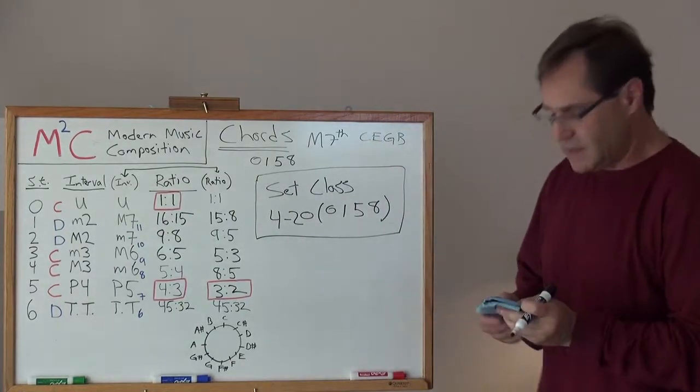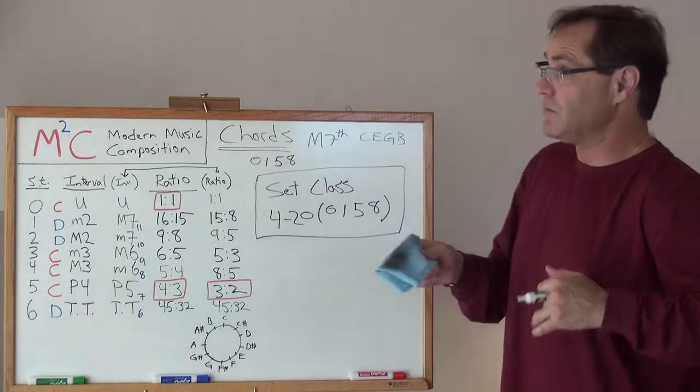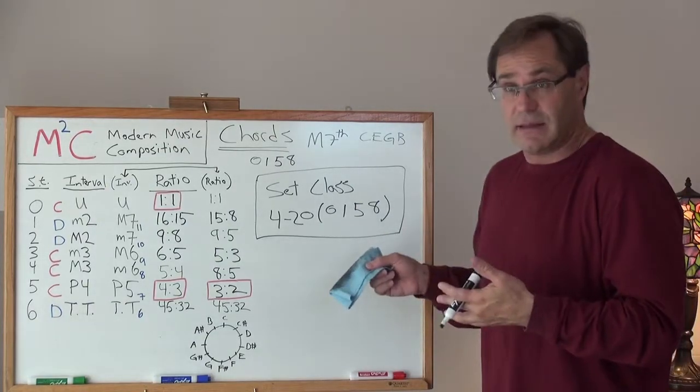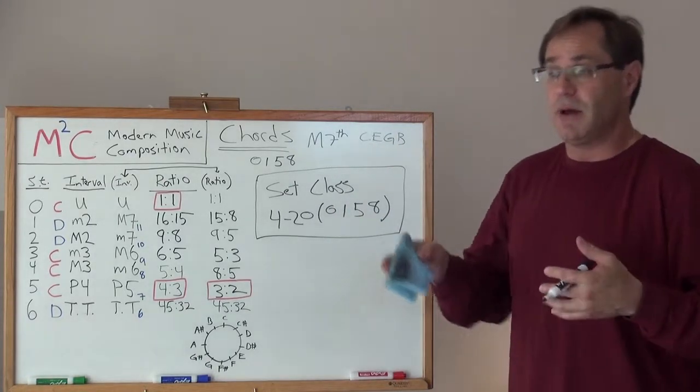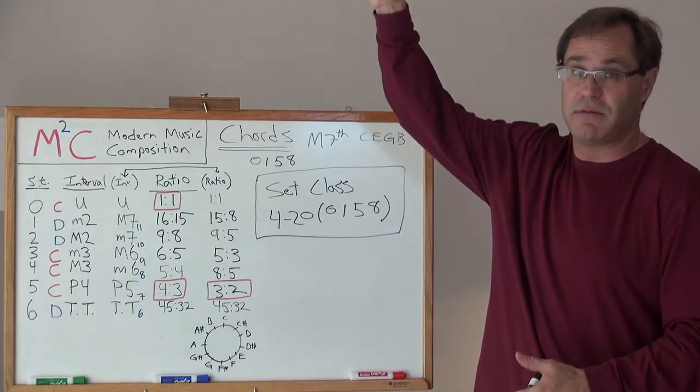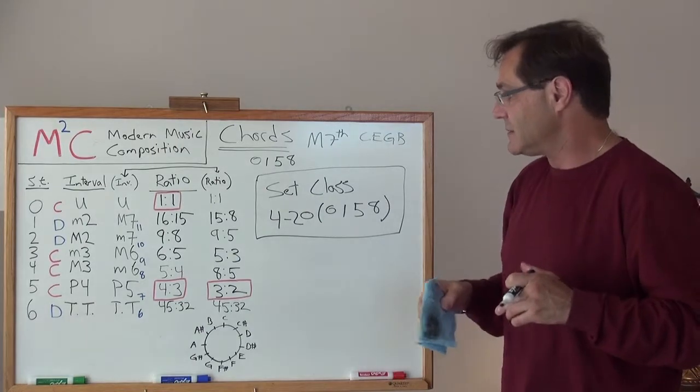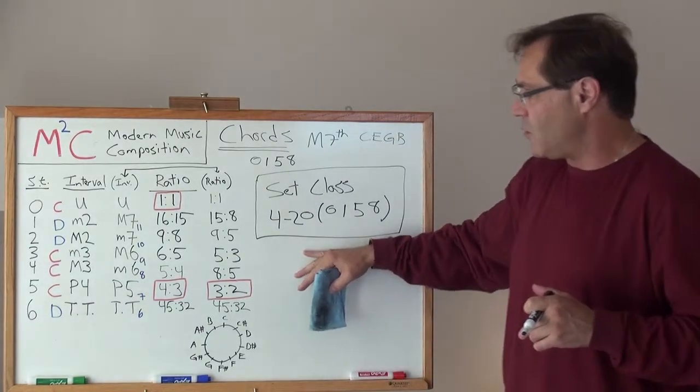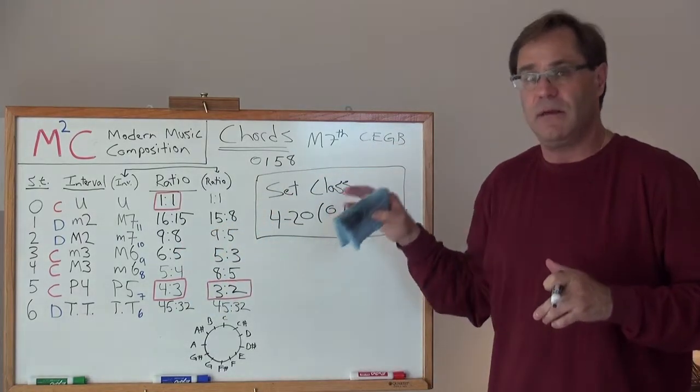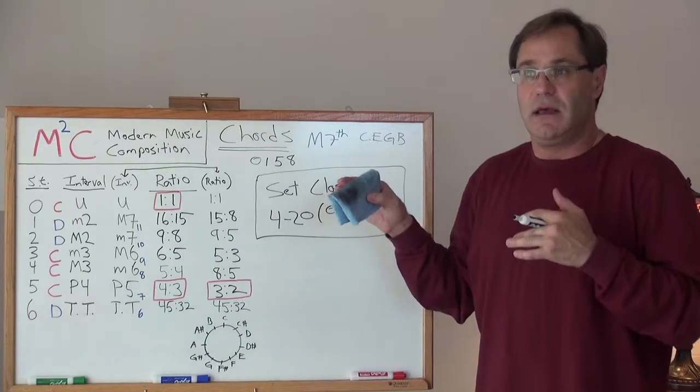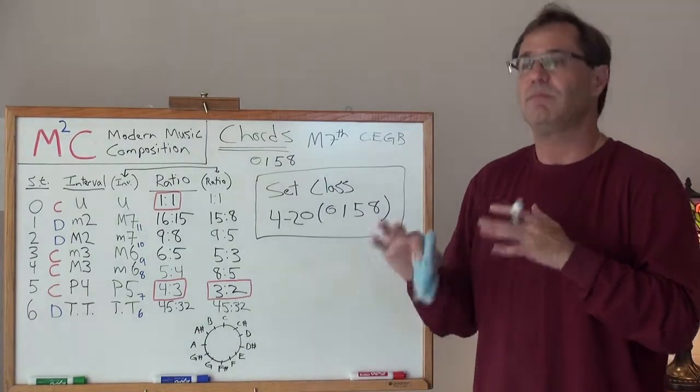So, as you can see, the more and more I calculate these set classes, the easier it becomes. The more in tune you get to calculating these things. Obviously, when the sequence gets larger, things get a little bit more complicated, but lucky for us, we have a table to look at, which I haven't shown you yet, but this table exists of all 208 set classes.